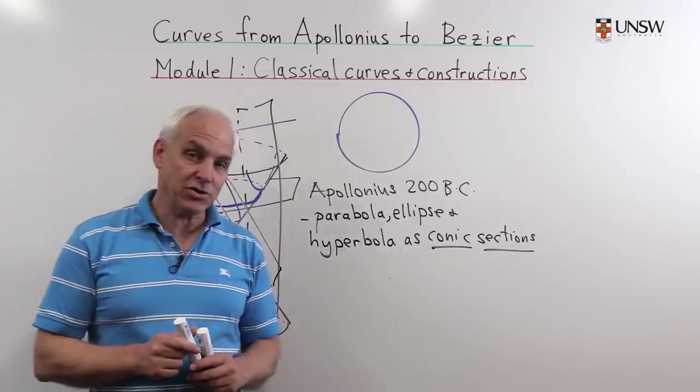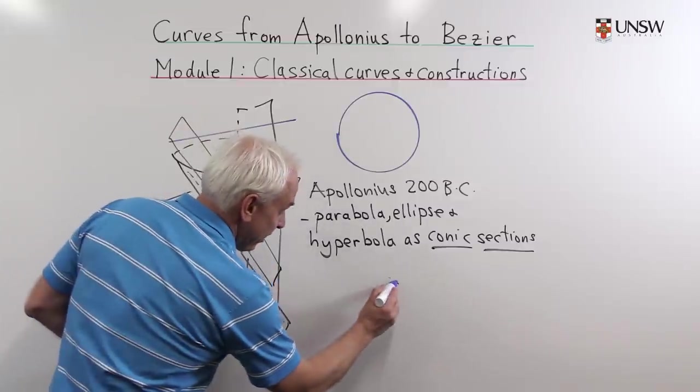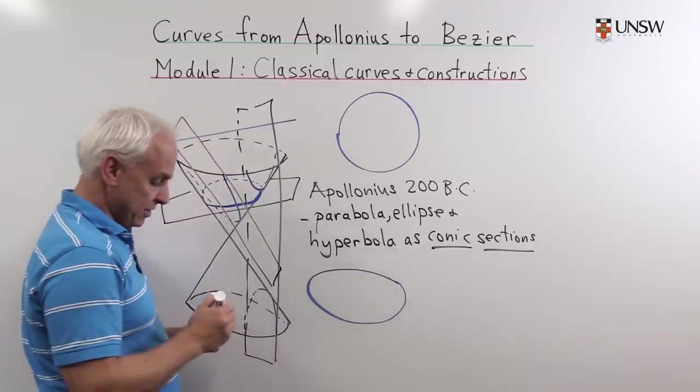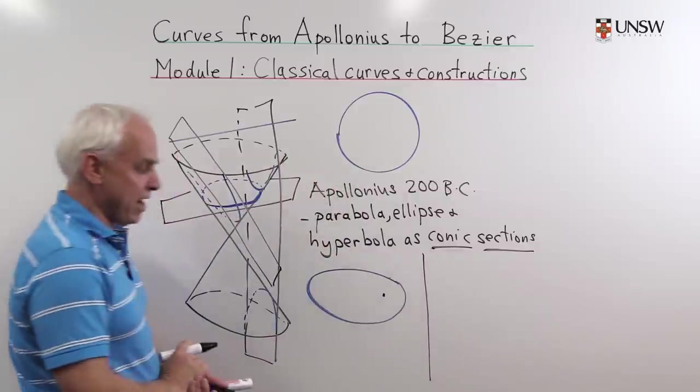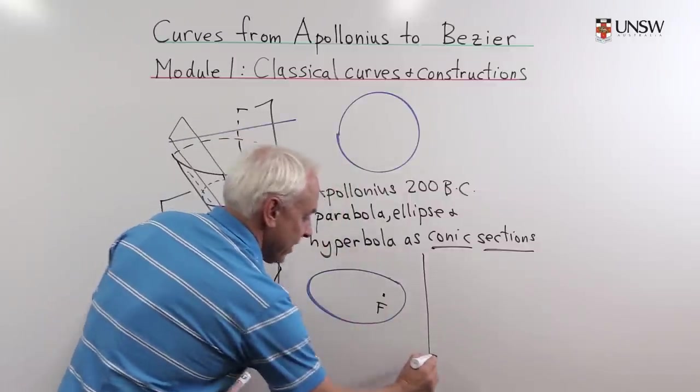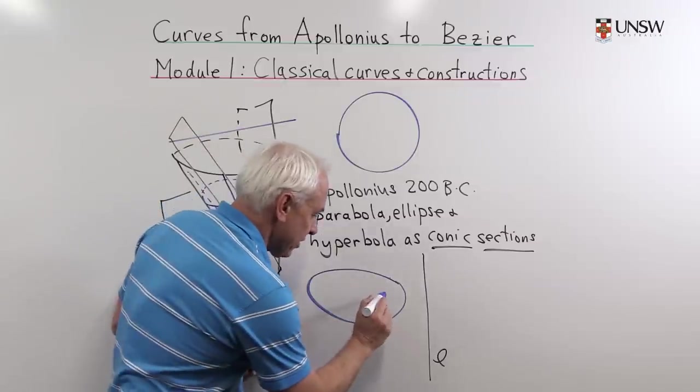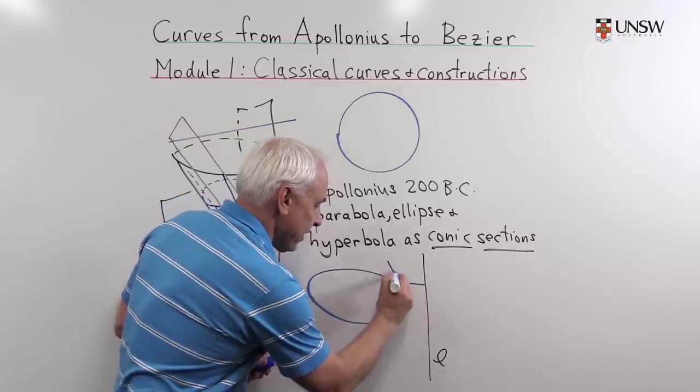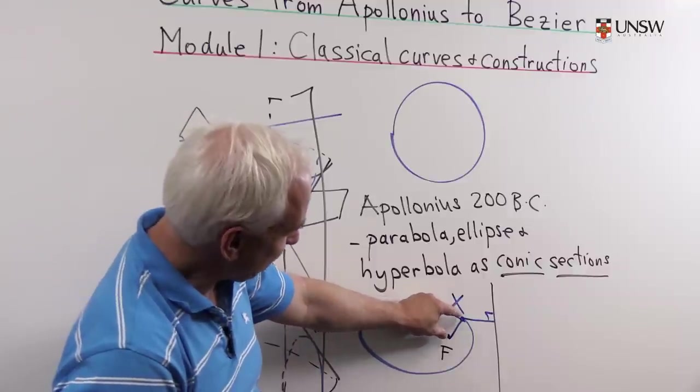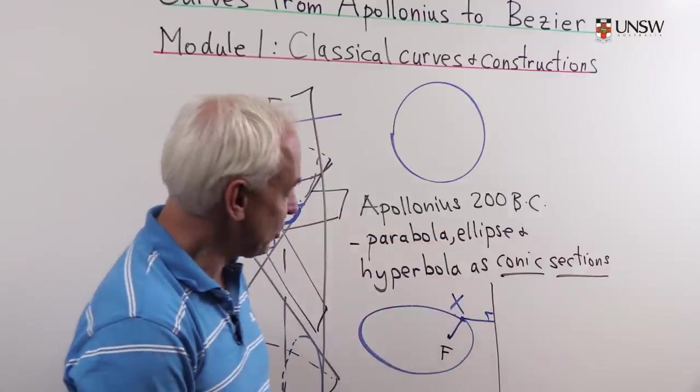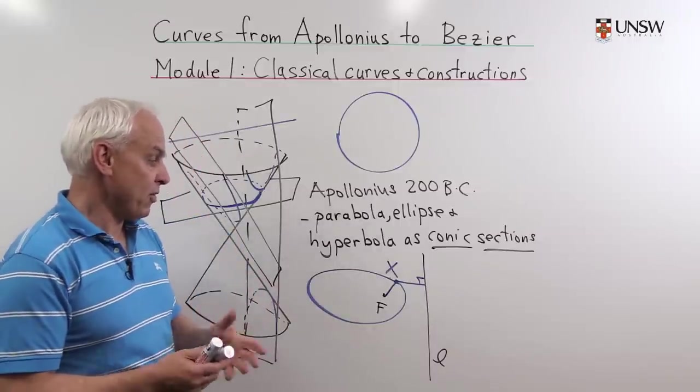In particular he understood the conic sections as metrical objects, in other words as things that you could obtain by looking at ratios. So here's an ellipse, and an ellipse can be obtained by a point and a line—a point called a focus, say F, and a line L called the directrix. And the crucial issue is that if we look at a point x which has the property that the relationship between the distance to the focus and the distance to the line is always a fixed constant, then we pick up either an ellipse or a parabola or a hyperbola.